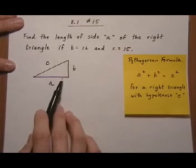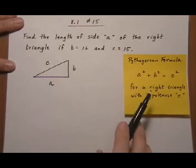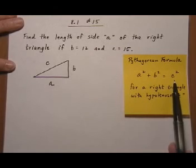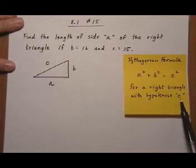Well, we're told this is a right triangle, so we are going to use the Pythagorean formula, which tells us that A squared plus B squared equals C squared for a right triangle with hypotenuse C.